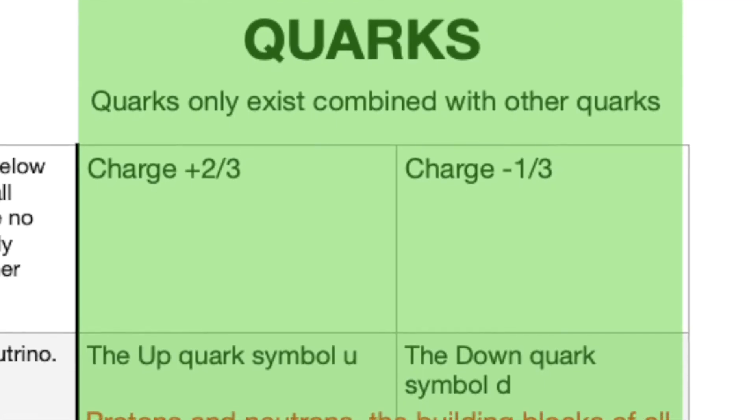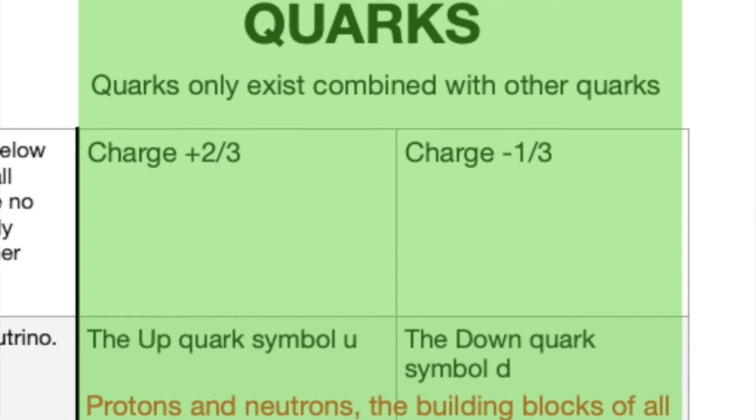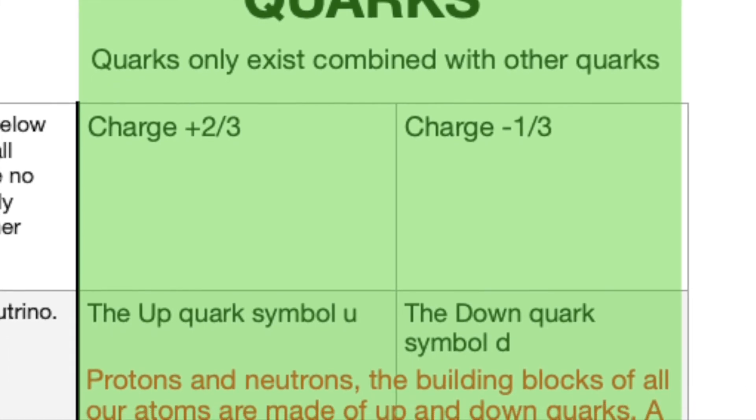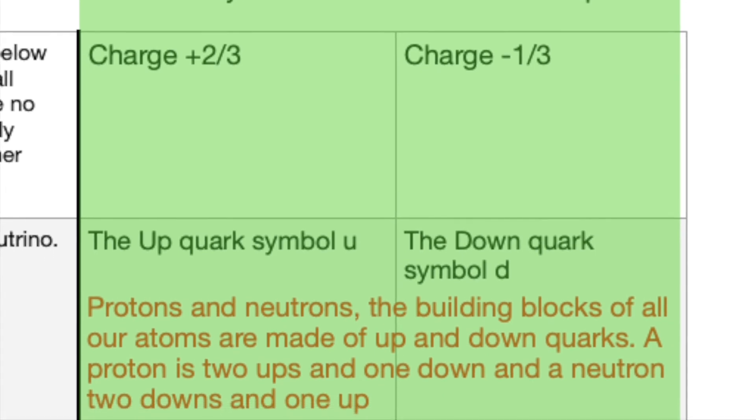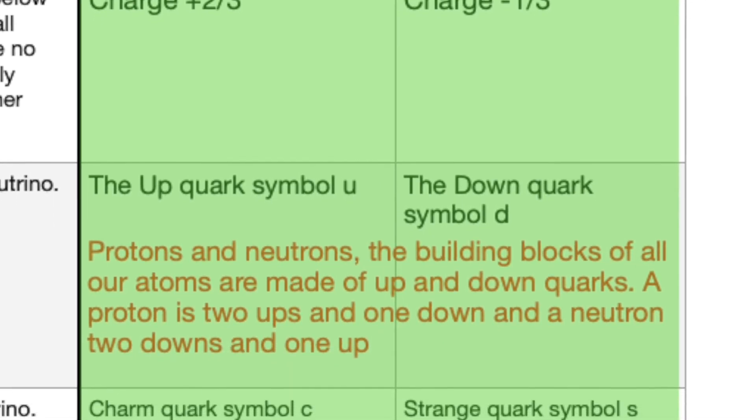Quickly summarizing the properties of quarks: three, that is the up, charm, and top quark, have a plus two-thirds charge. The down, strange, and bottom quark have a minus one-third charge.